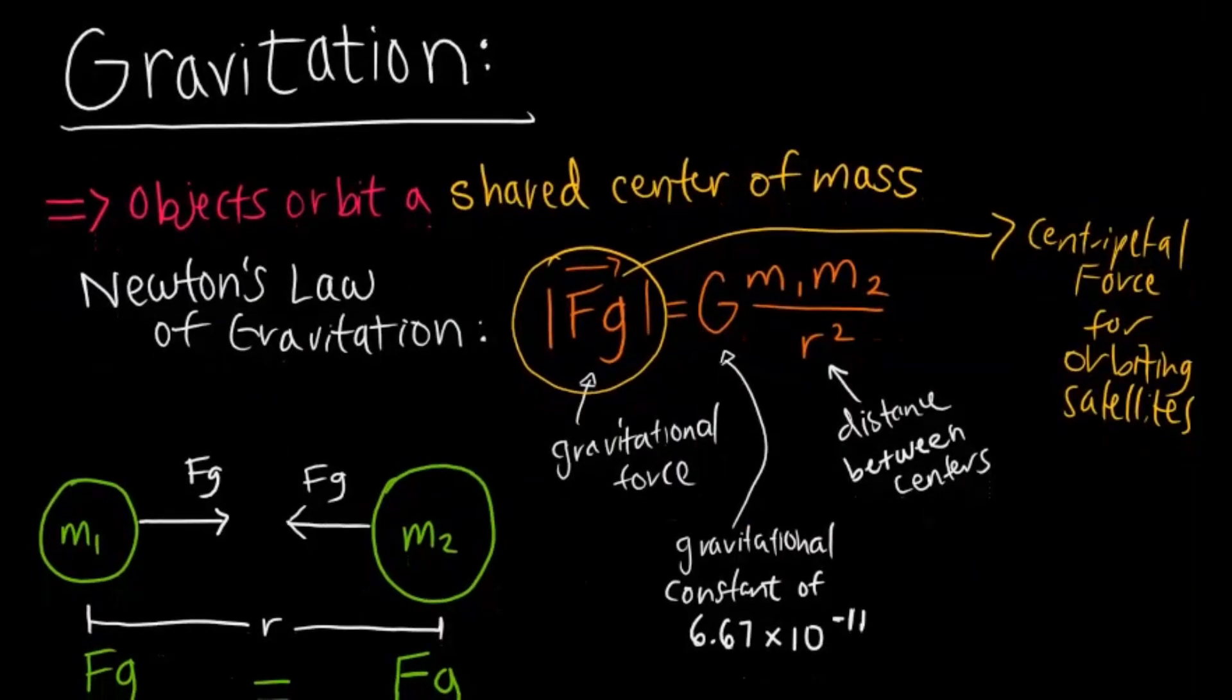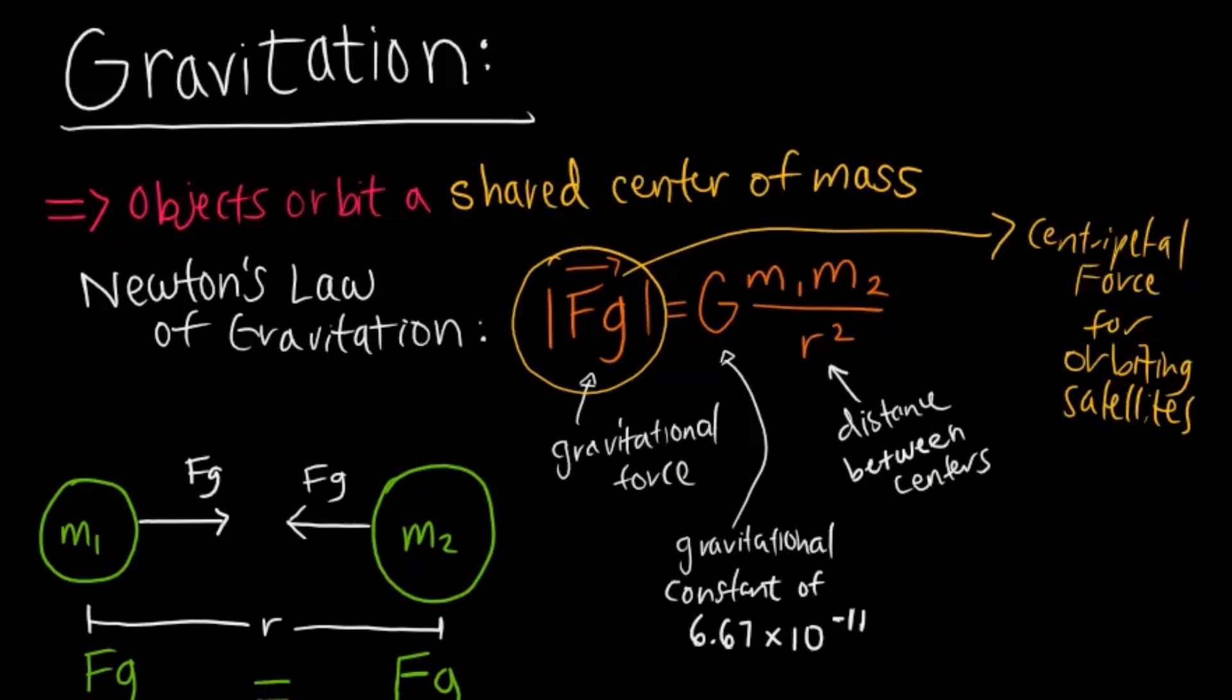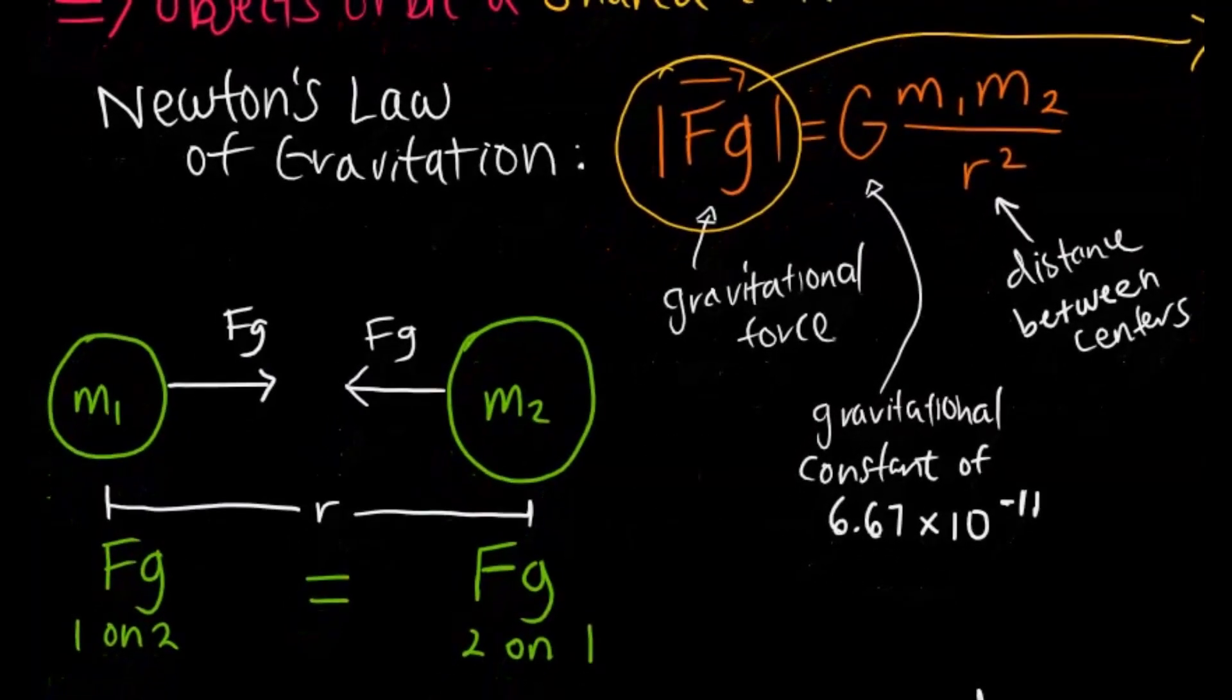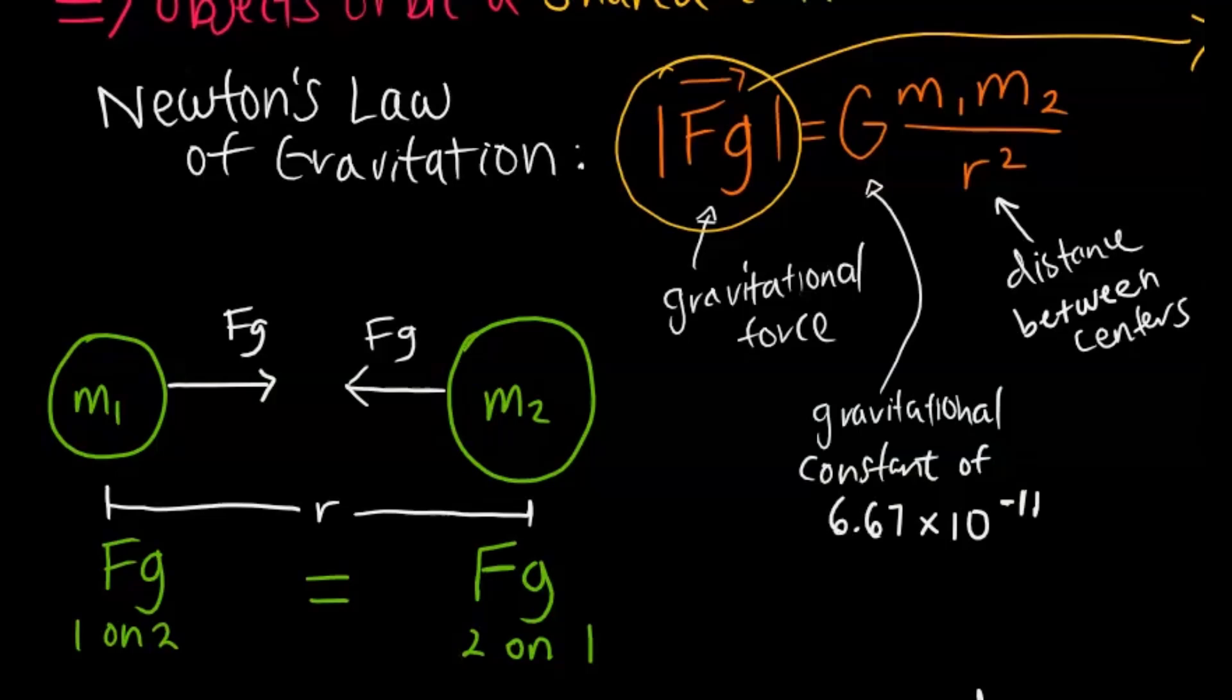All right. So the second thing is gravitation. Essentially, objects are going to be orbiting a shared center of mass. And the first part of this is Newton's law of gravitation. So it's very similar to Newton's third law, actually. You can see here that the gravitational force that planet one exerts on planet two is equivalent to the gravitational force that planet two exerts on planet one. And they're going to be orbiting the center of mass in between them. And the equation that represents that gravitational force is equivalent to the gravitational constant times mass of one times mass of two divided by r squared.